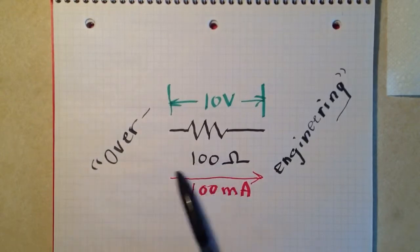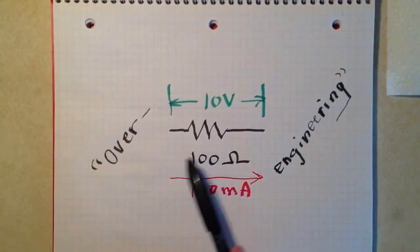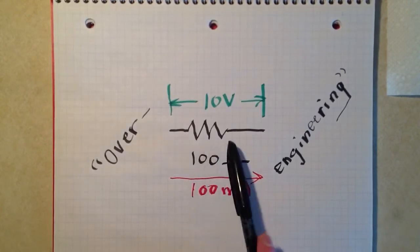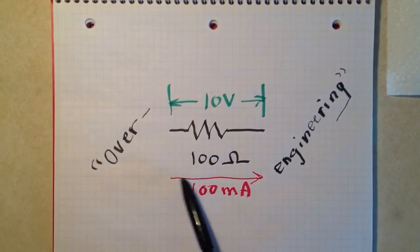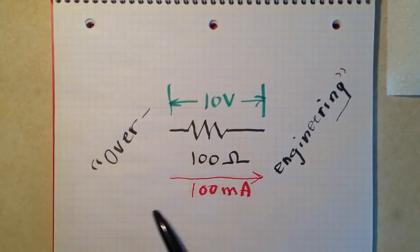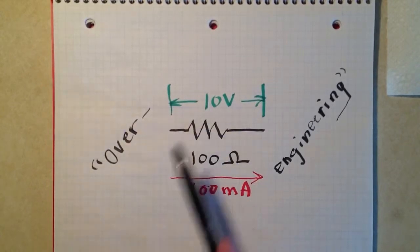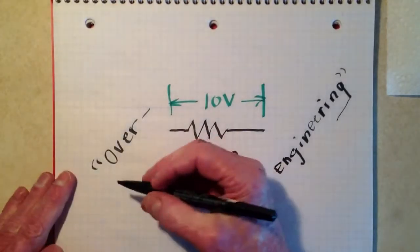The exact same situation but portrayed in a different way: if you run 100 milliamps through that resistor, or a tenth of an amp, then the power that dissipates is the square of the current in amperes times the resistance in ohms, or 0.1 squared, which is 0.01, times 100, which is 1 watt.